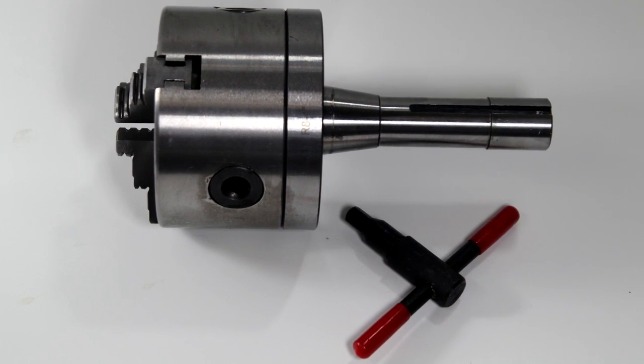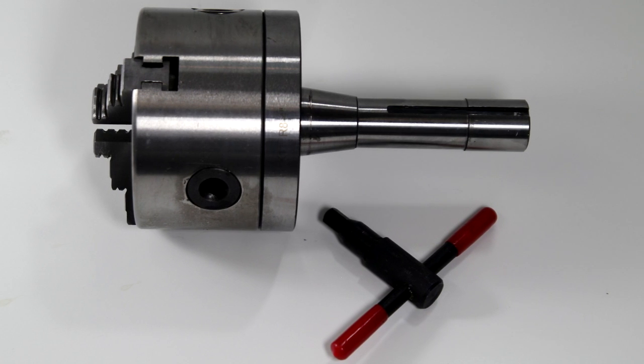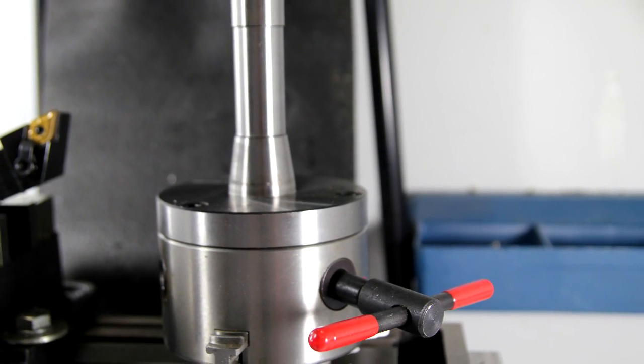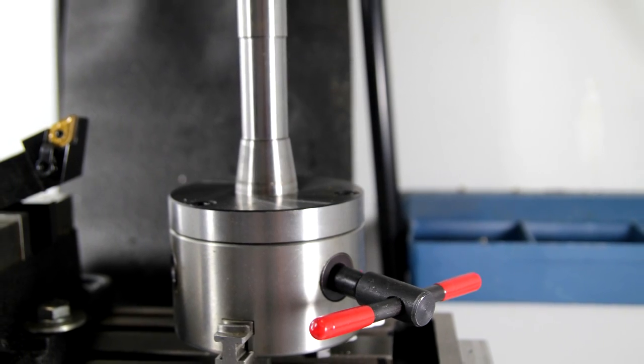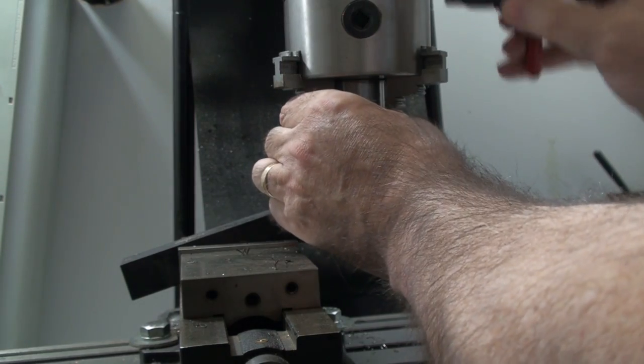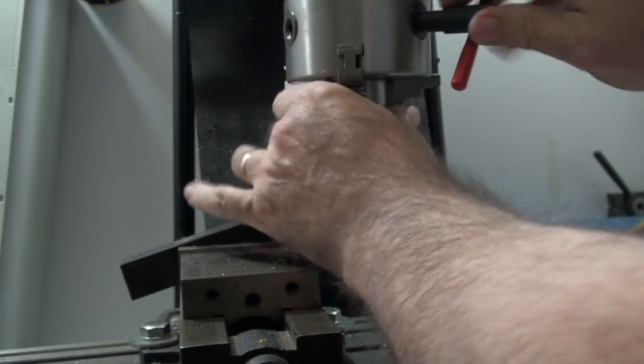One other thing you're going to need is some kind of way to hold the stock in the spindle. I found this 4 inch 3 jaw chuck, just like you would find on a lathe, mounted on an R8 arbor on eBay, and it's perfect in this application. There is a chance of introducing runout using a chuck like this, but as we'll see in a moment, this is a problem that takes care of itself.